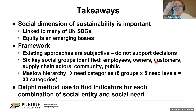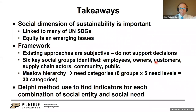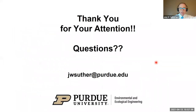A couple of takeaways: the social dimension is incredibly important — never more important than it is today. There is much more thinking about equity, and I think that's a very positive thing. We came up with a framework and Delphi-studied to identify these top indicators for each of these need categories, applying nice statistics to do that. And that's where we are.